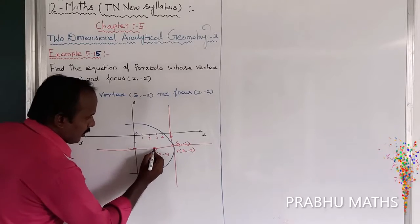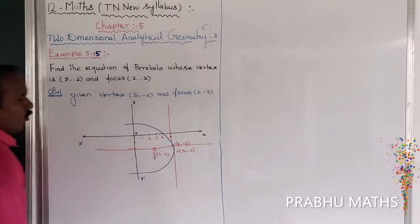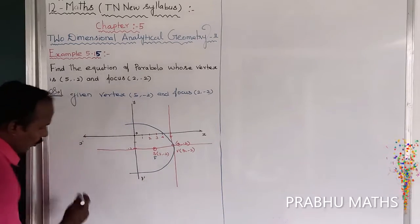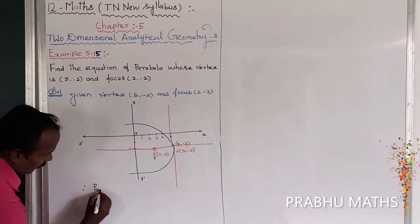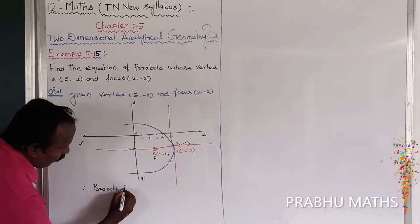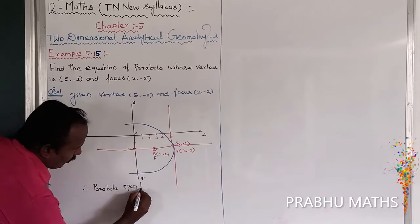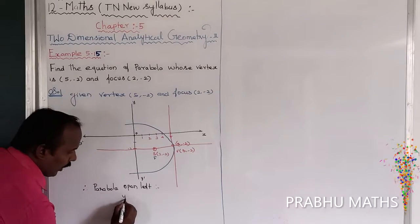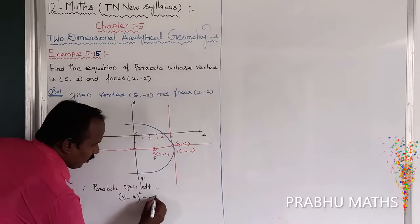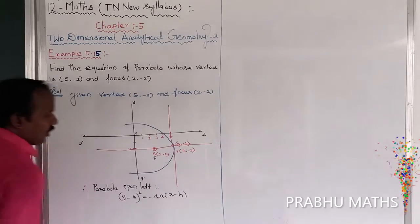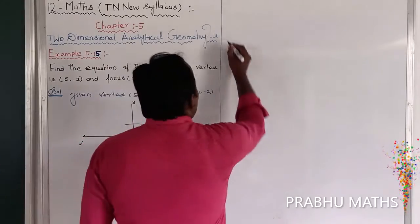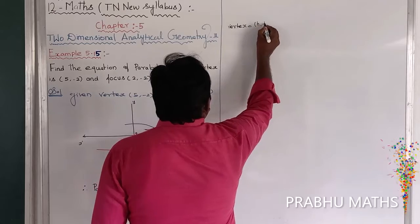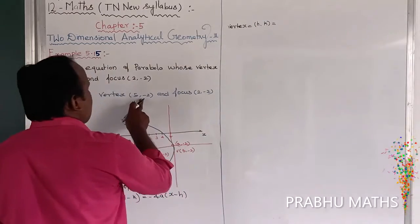The parabola is left-side open, passing through the vertex. The general form of a left-side open parabola is: (Y - K)² = -4A(X - H). From the given vertex (5, -2), we get H = 5 and K = -2.